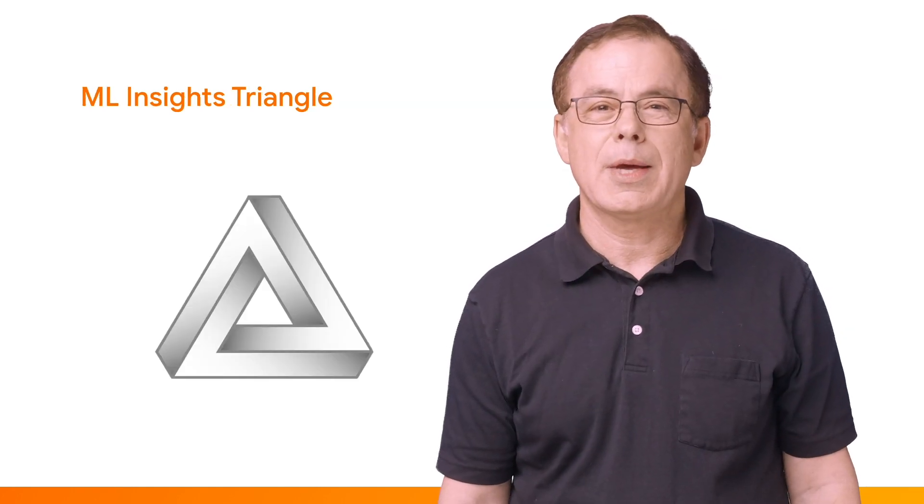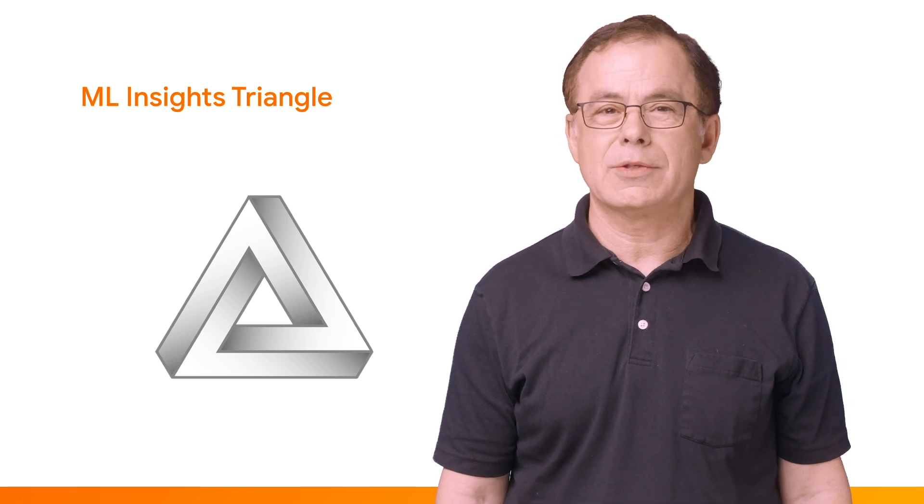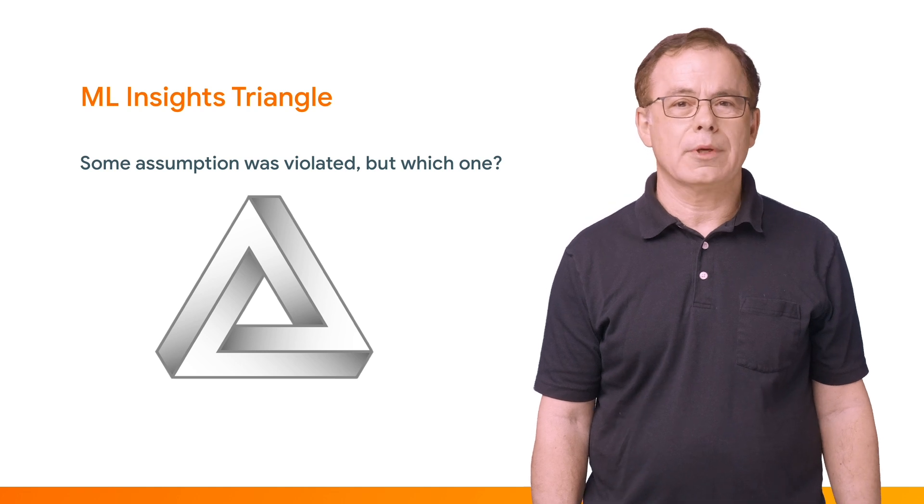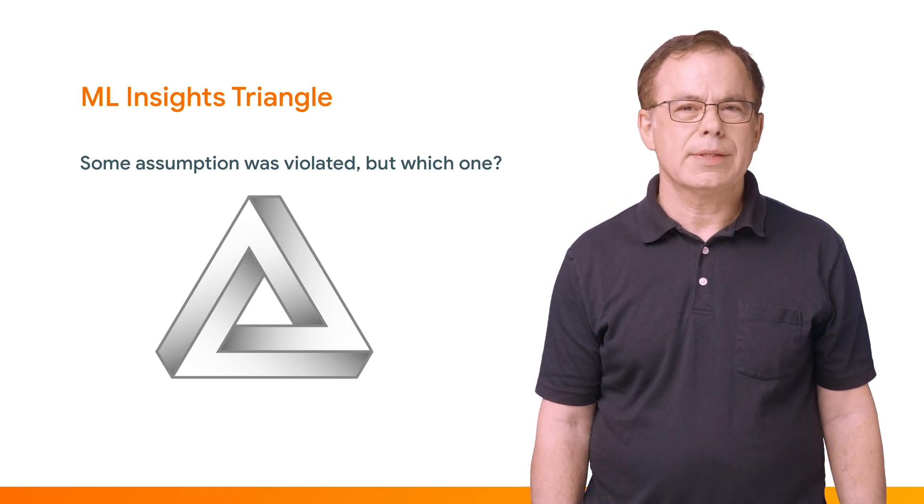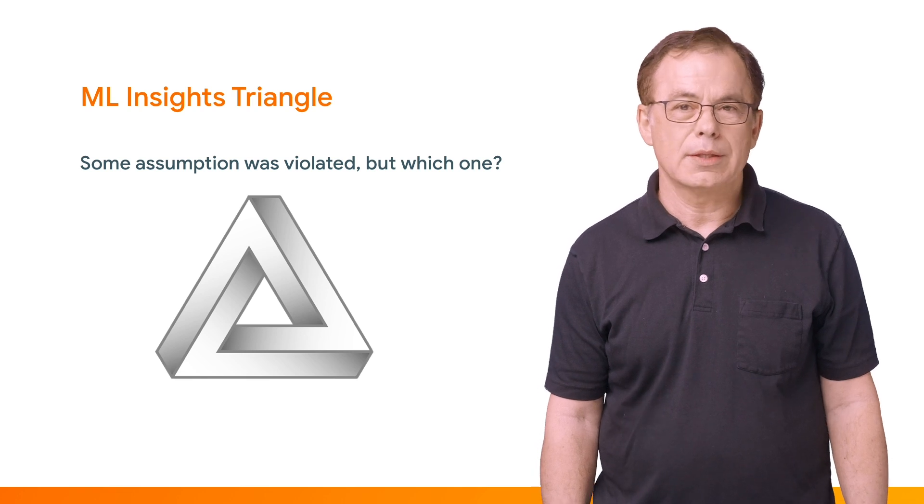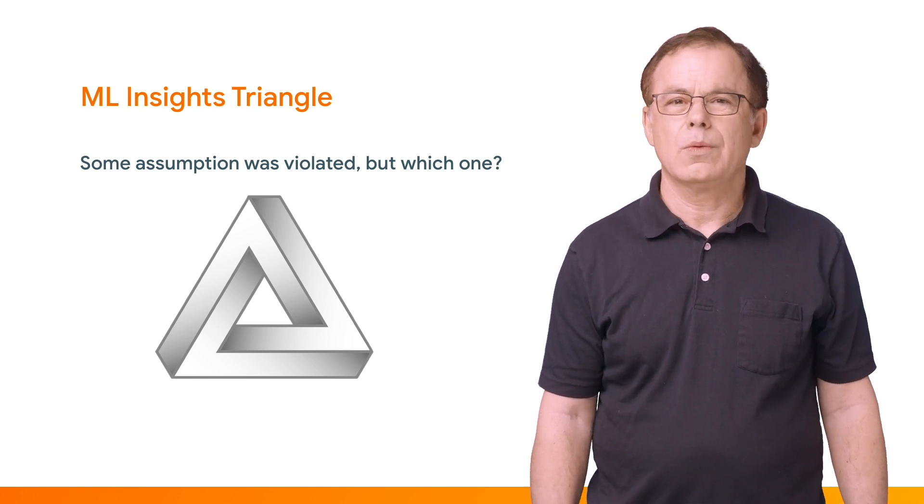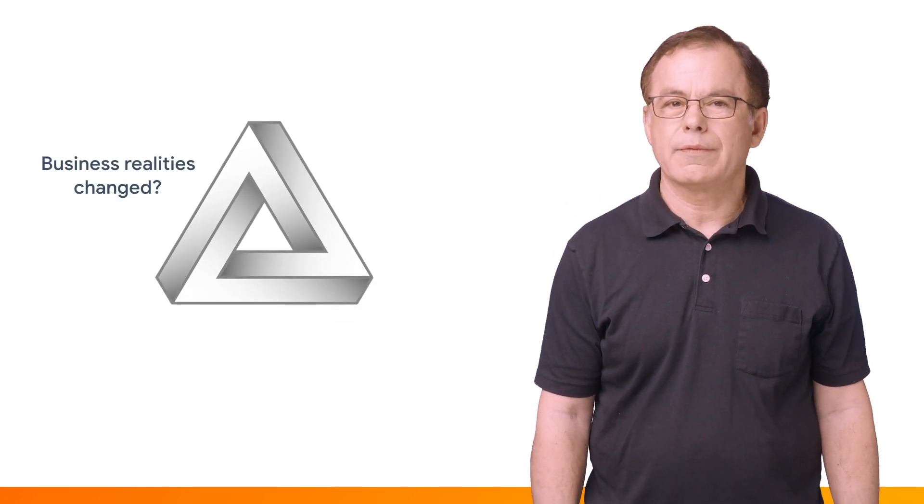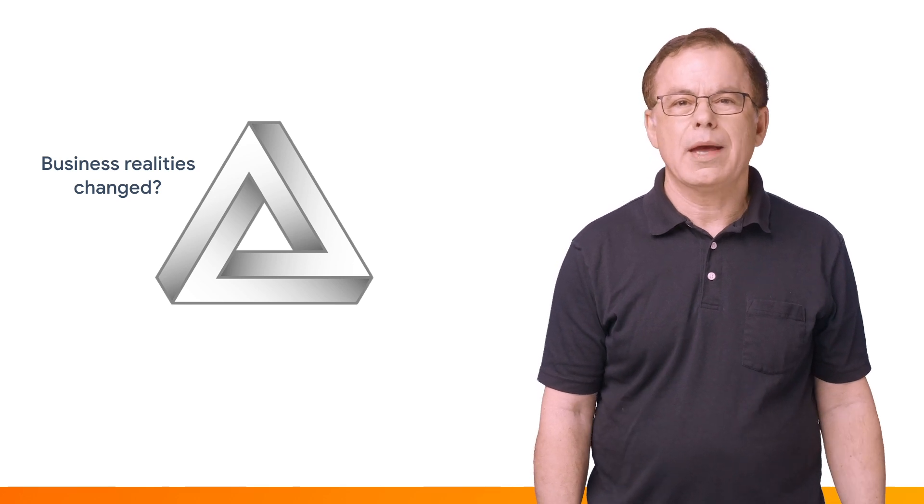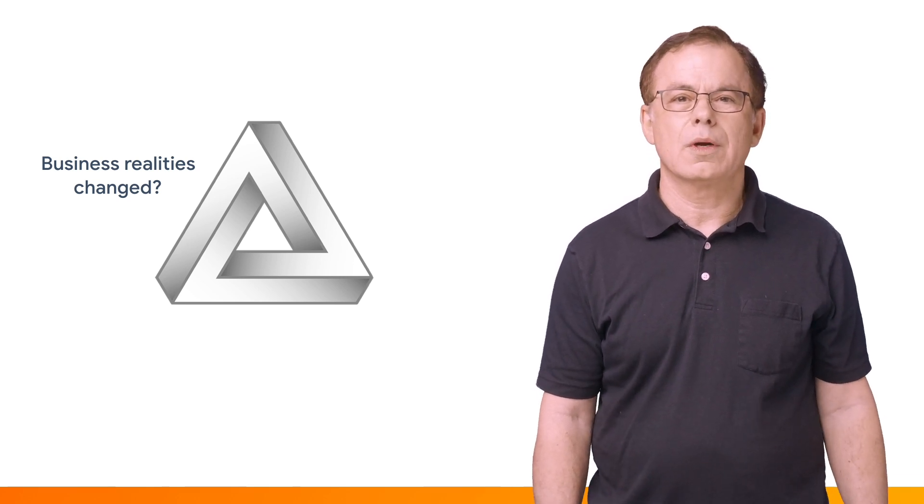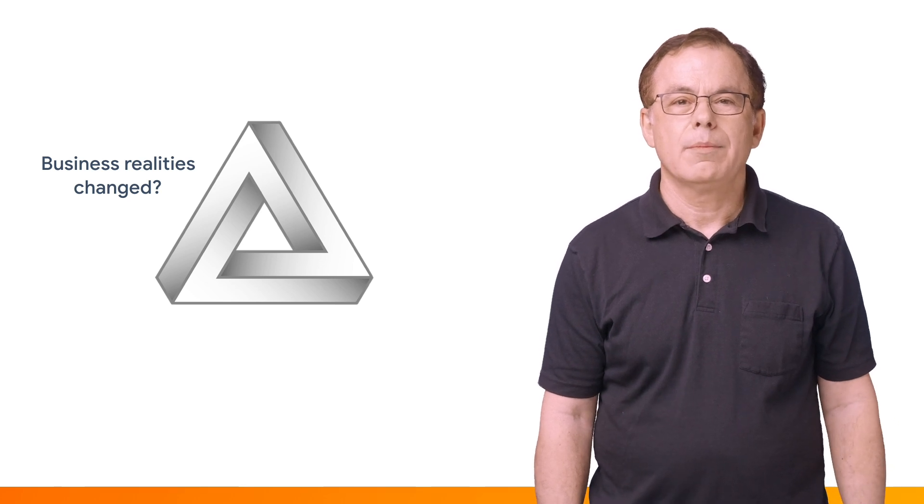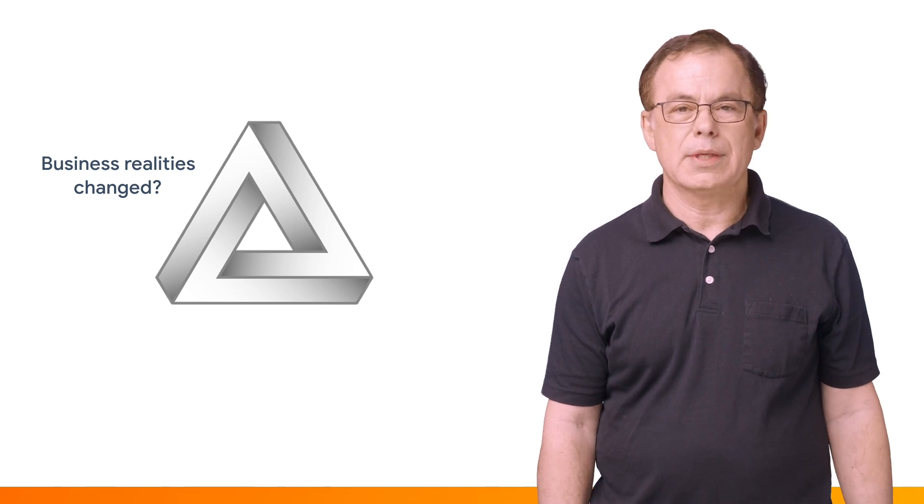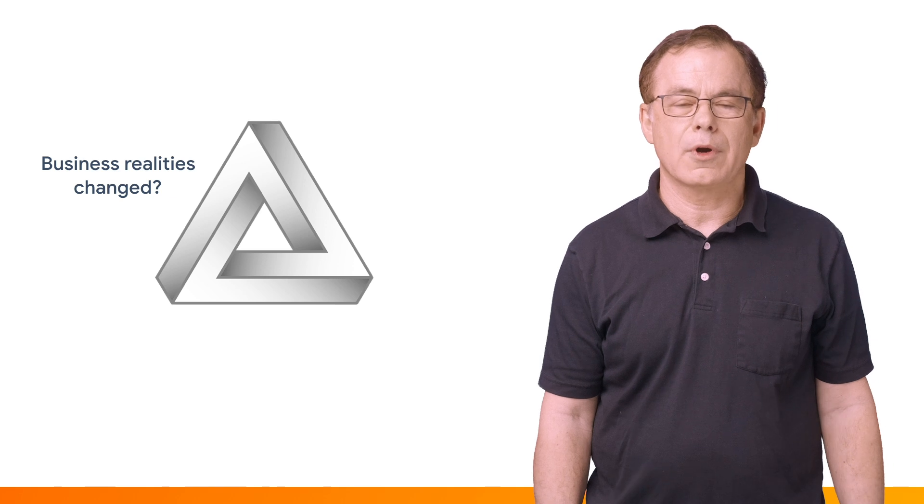One way to look at this is to think about a triangle, which we call the ML Insights Triangle. We found that usually when there's a problem with your model's performance for your business, it's because an assumption was violated. The question is, which one? So, what are these assumptions? First, has something about the realities of our business changed? Maybe we have a new supplier or a new product has been released. Maybe our customer's behavior has changed. All of these can affect our business and how well our models perform for our business.